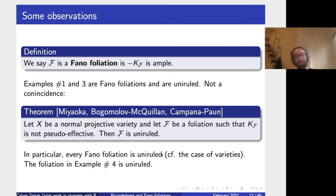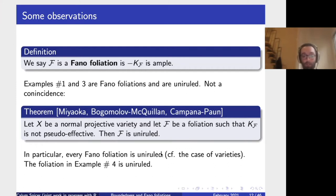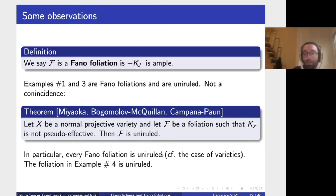A Fano foliation is a foliation such that minus KF is ample — with the additional condition that F is log canonical, which I'll define shortly. Examples one and three are both Fano foliations and are both uniruled — this isn't a coincidence. It's a great theorem by Miyaoka, Bogomolov–McQuillan and Campana–Peternell, and also Nick Shepherd-Barron, that if we have a normal projective variety and a foliation such that KF is not pseudo-effective, then that foliation is always uniruled. The crucial point is that the rational curves produced are tangent to the foliation.